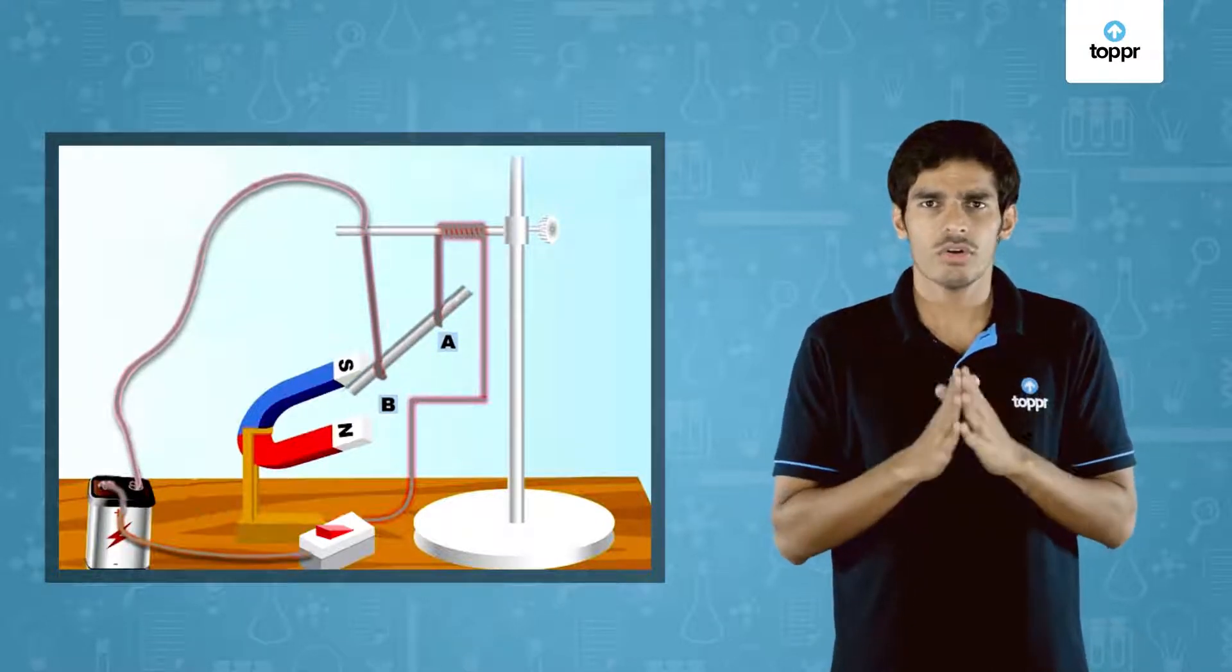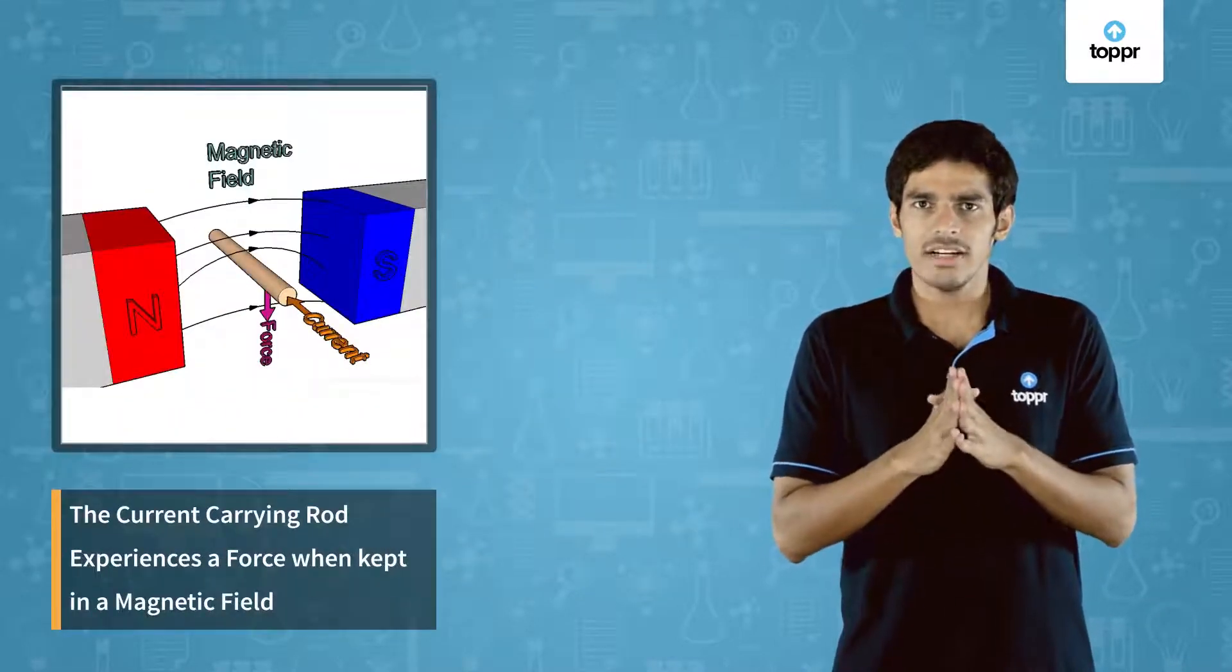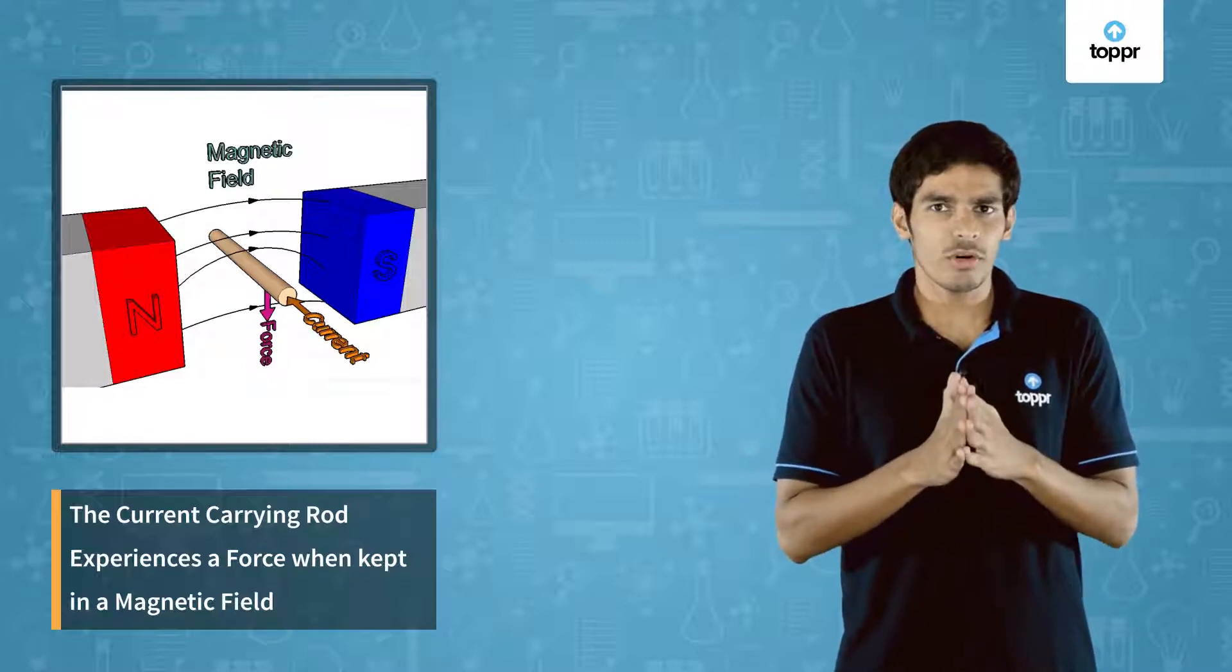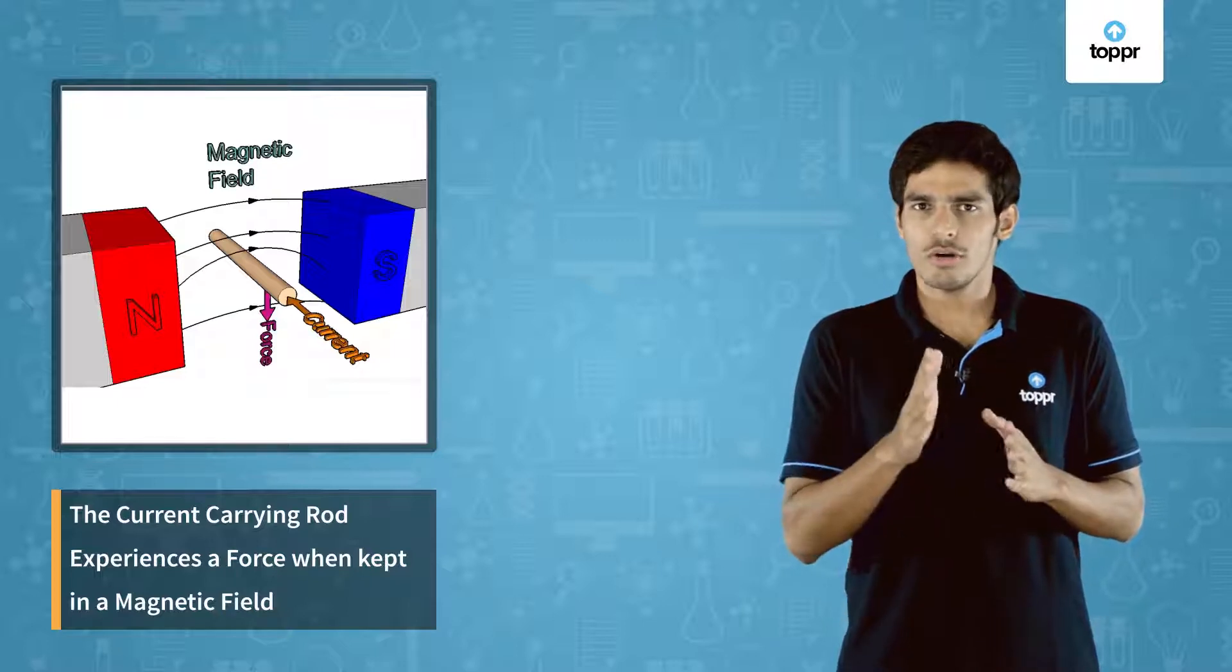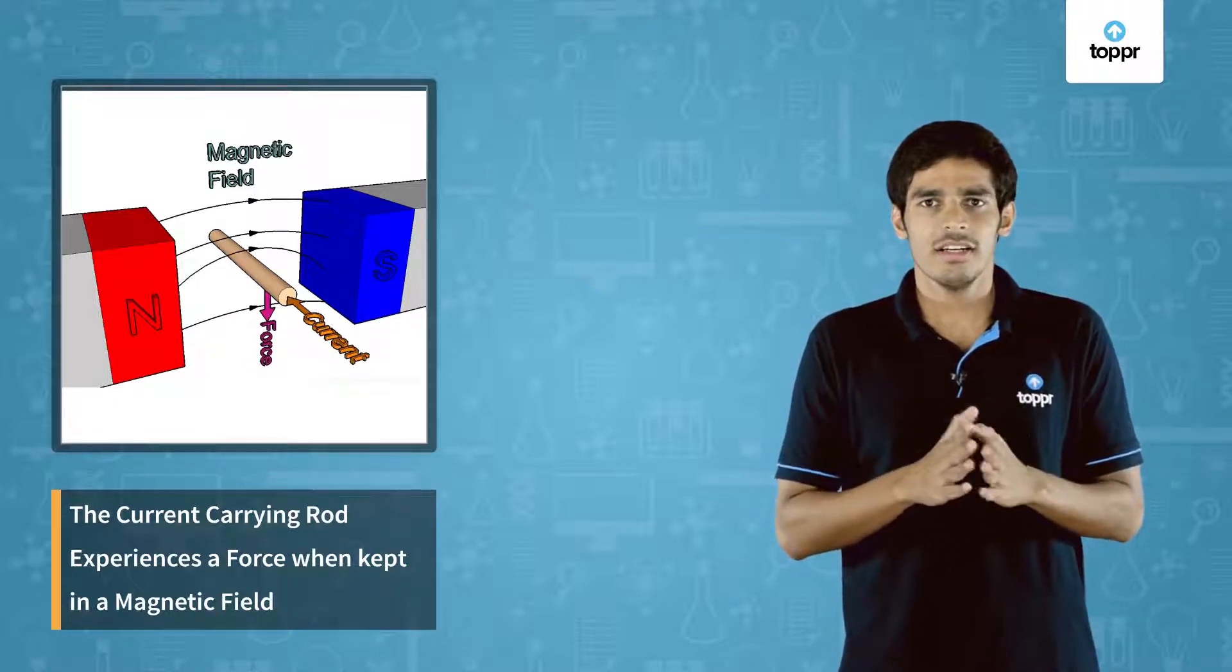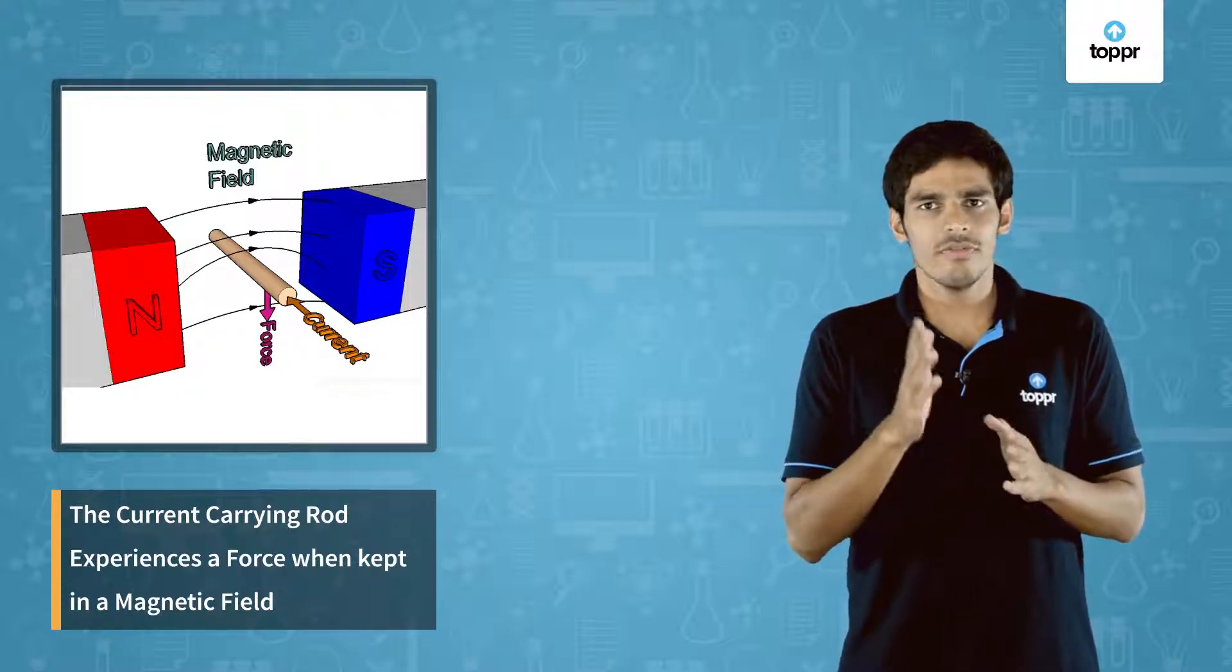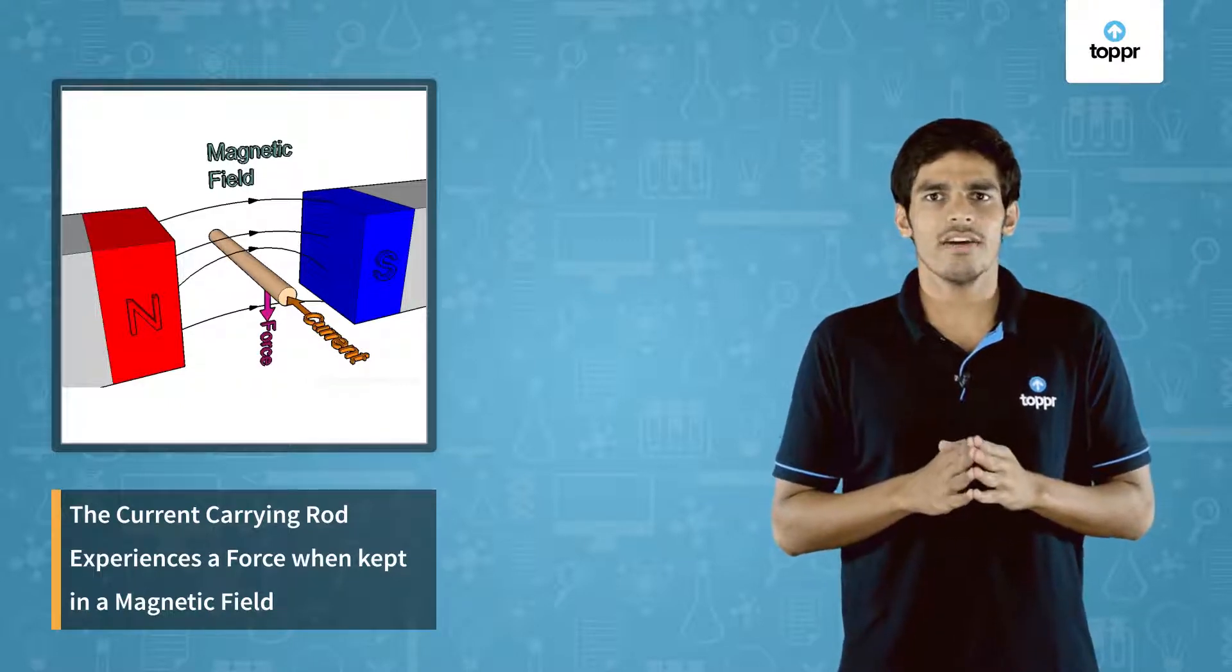What causes the rod to move? The displacement of the rod proves that what André-Marie-Ampère suggested is true. When the current carrying aluminium rod was kept in a magnetic field, it experienced a force. Also when we reverse the direction of current in the circuit, the direction of force also reversed. Therefore we can say the direction of force is dependent on the direction of current flowing in the circuit.